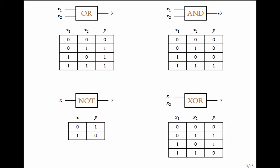The AND of two inputs is 1 when both X1 and X2 are 1, otherwise it is 0. The NOT gate receives a single input and gives a single output — it complements the input, so if the input is 0 the output is 1, and if the input is 1 the output is 0. Exclusive OR (XOR) is 1 if exactly one of the inputs is 1. When both X1 and X2 are 1, the output is 0 — this is the only difference with respect to the OR gate.